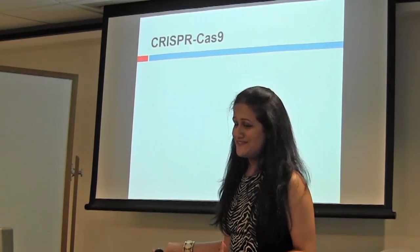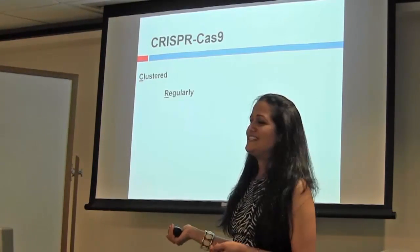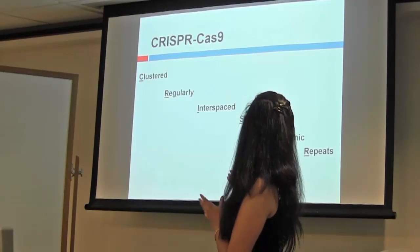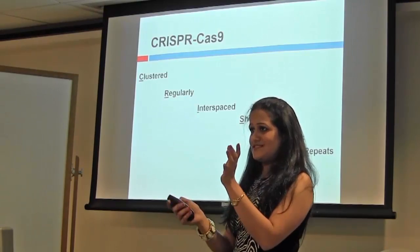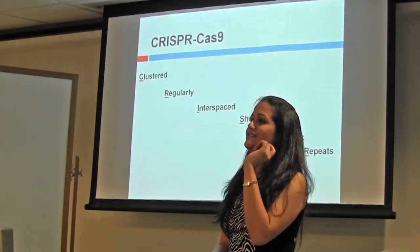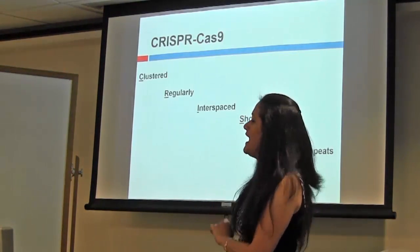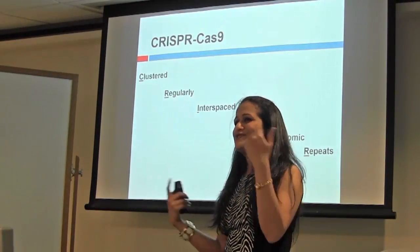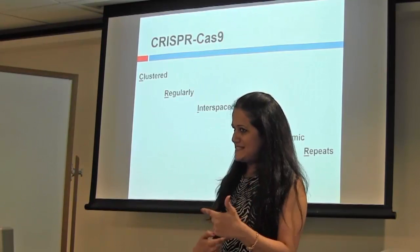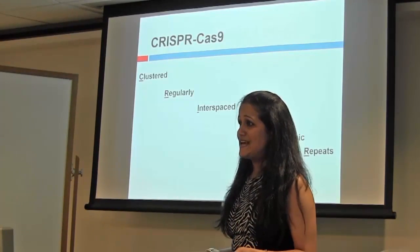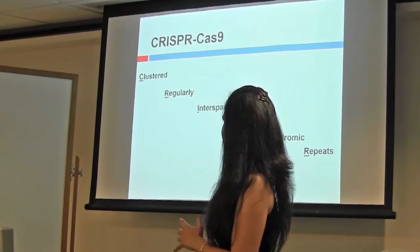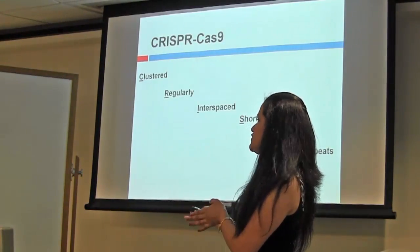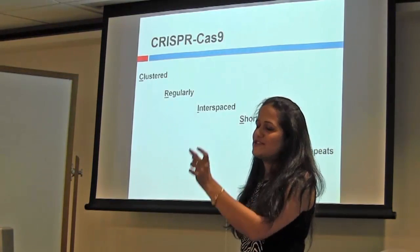The acronym CRISPR stands for Clustered Regularly Interspaced Short Palindromic Repeats. These are short palindromic repeats which are clustered and regularly interspaced from each other. A palindromic sequence reads the same from 5' to 3' on both DNA strands — as is the case in restriction enzyme recognition sites. These palindromic repeats are clustered and interspaced from each other with a spacer element in between.